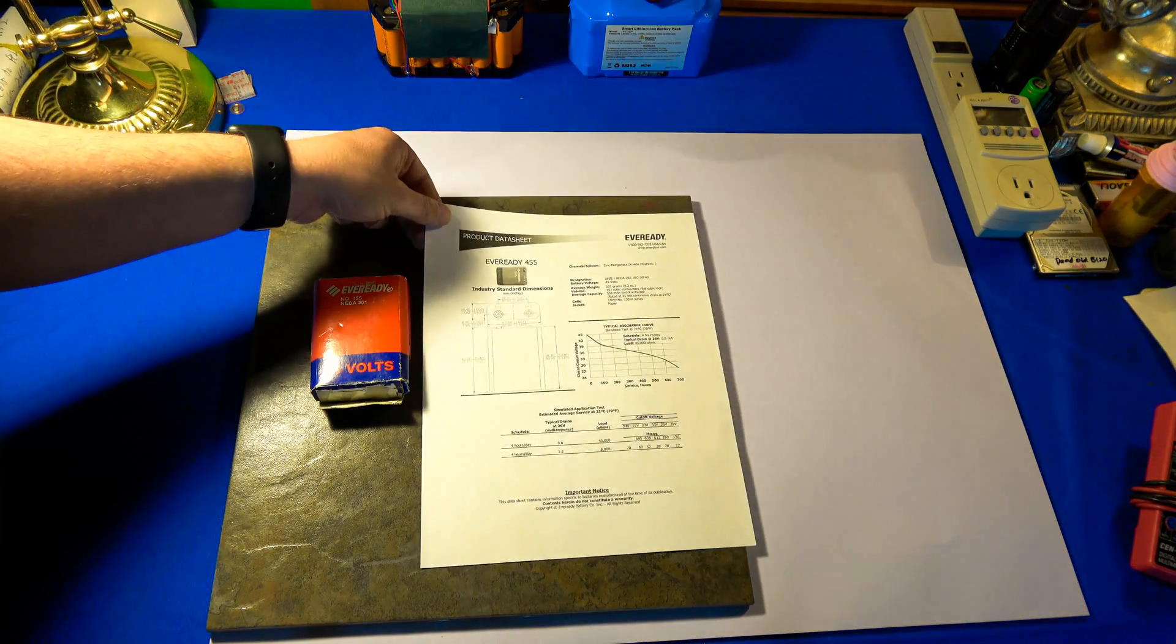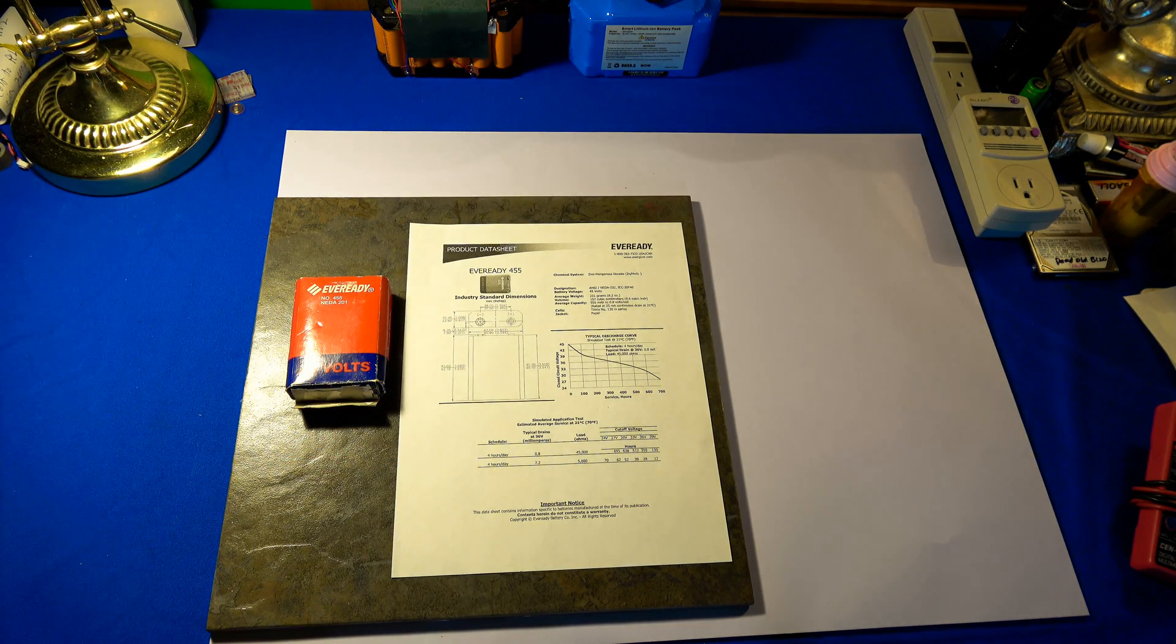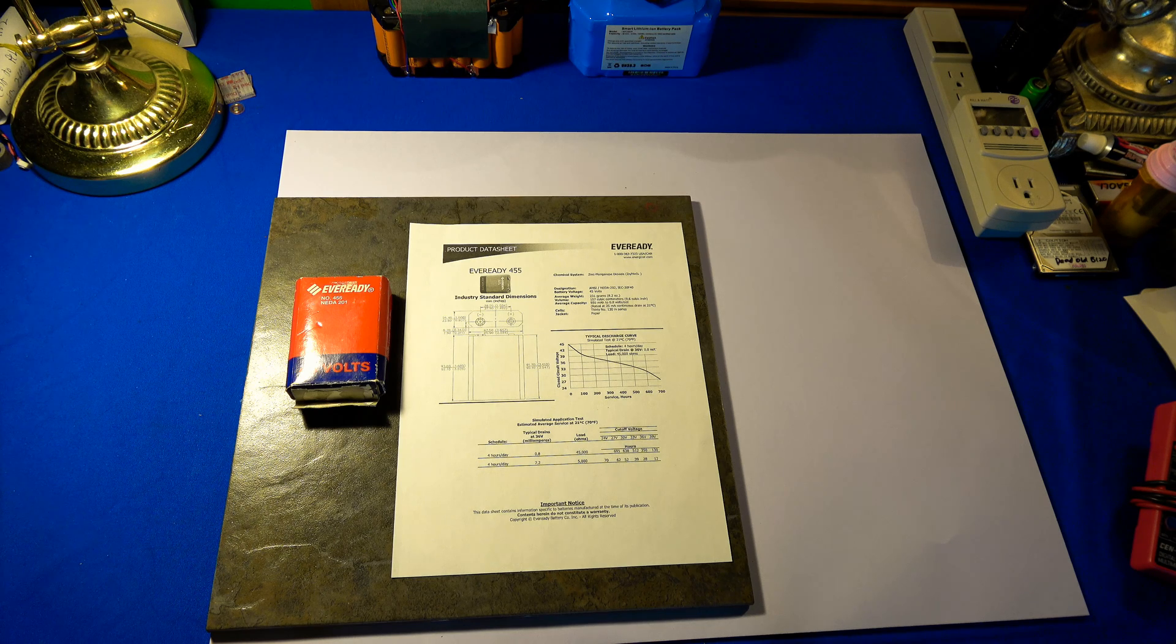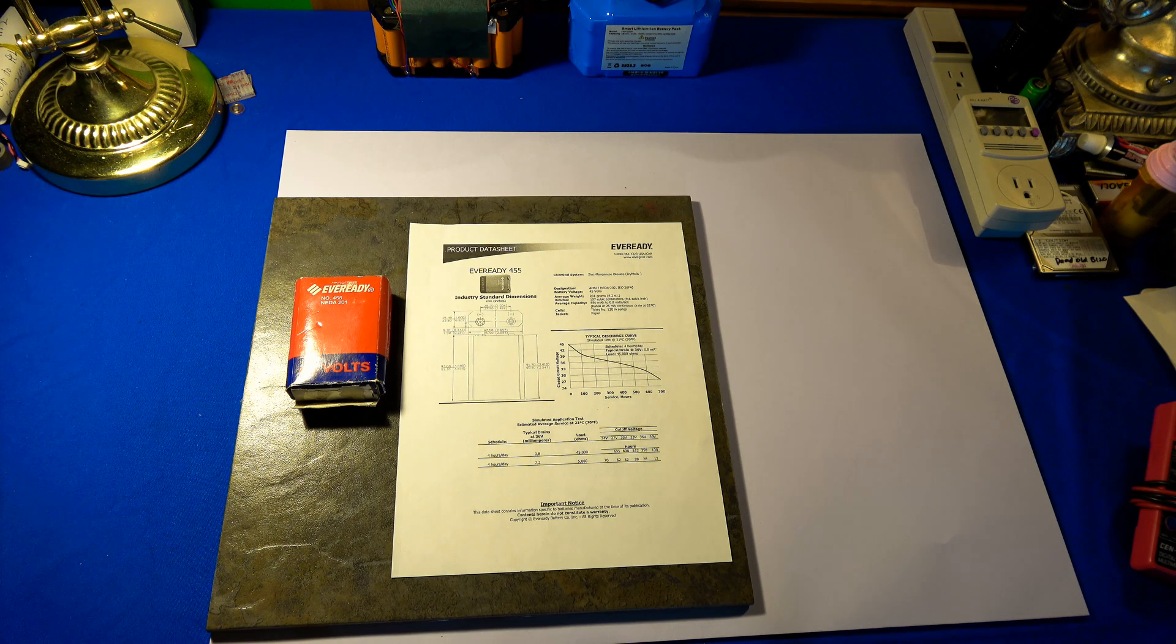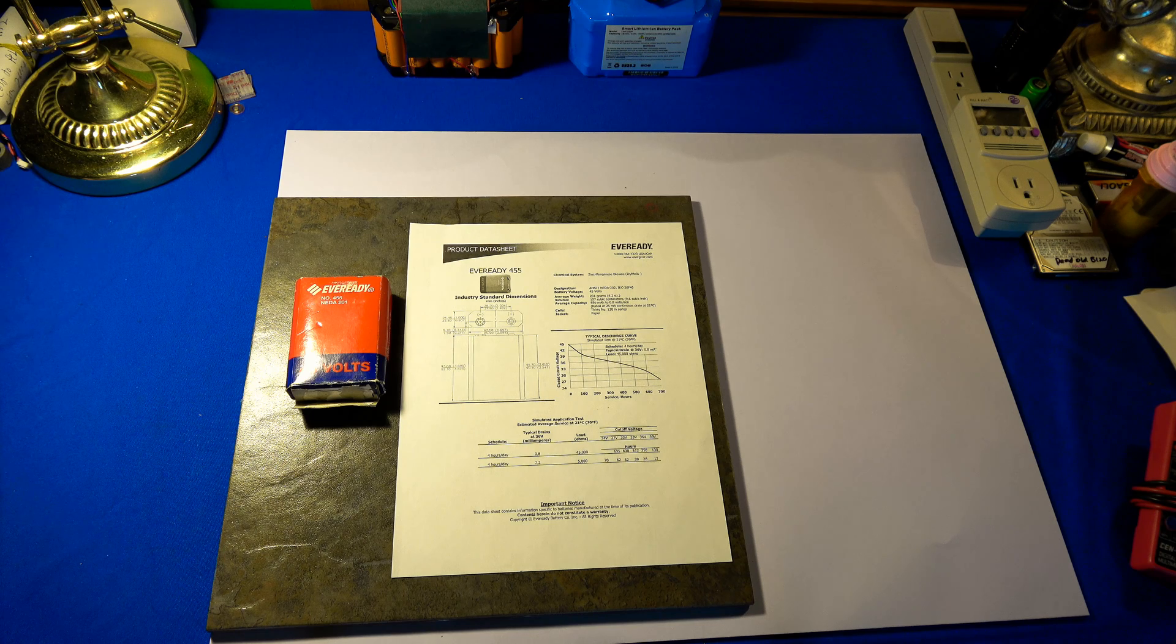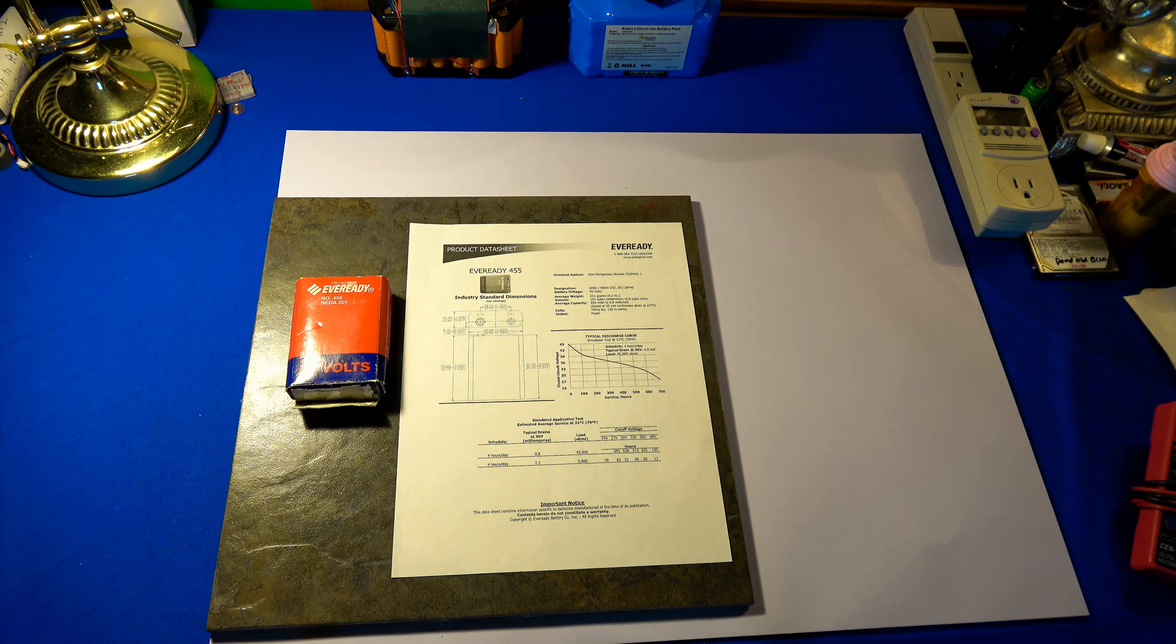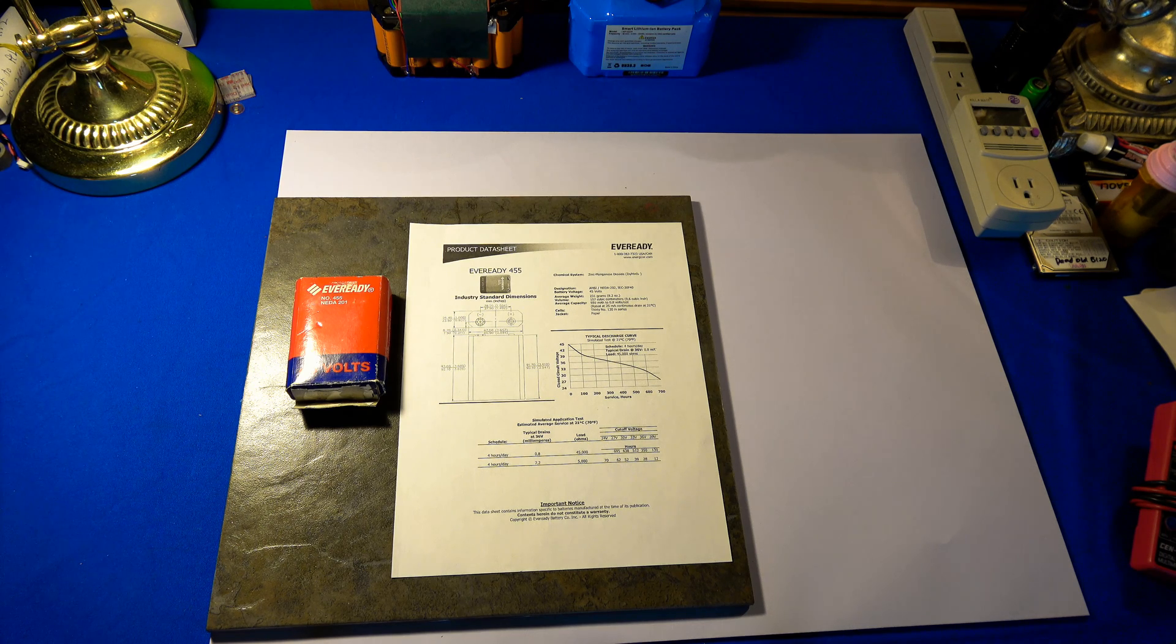I also have EverReady's product data sheet. Battery voltage nominal is 45 volts, 8.2 ounces or 231 grams. Average capacity 550 milliamp hours, 2.8 volts per cell. Rated at 25 milliamp continuous drain. So even though it was a high voltage battery, the ideal drain was actually relatively low drain. And it says it has 30 number 130 cells in a series with a paper jacket.